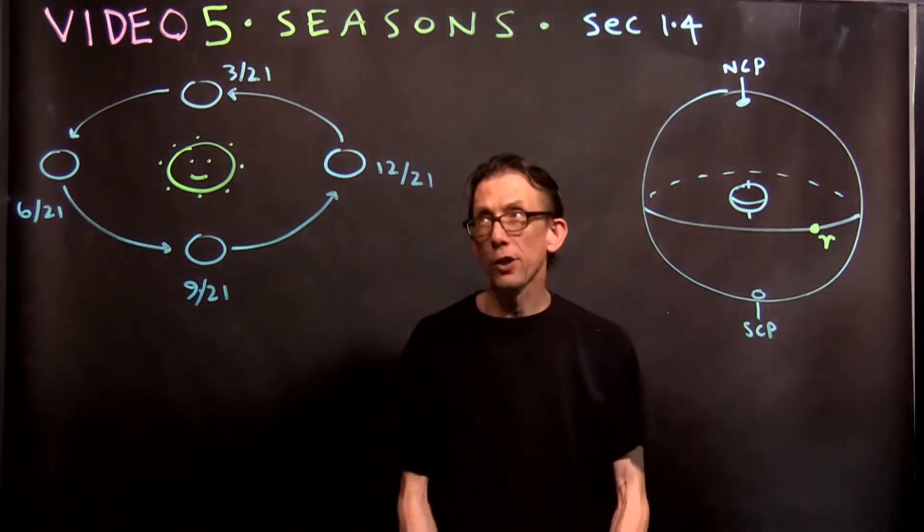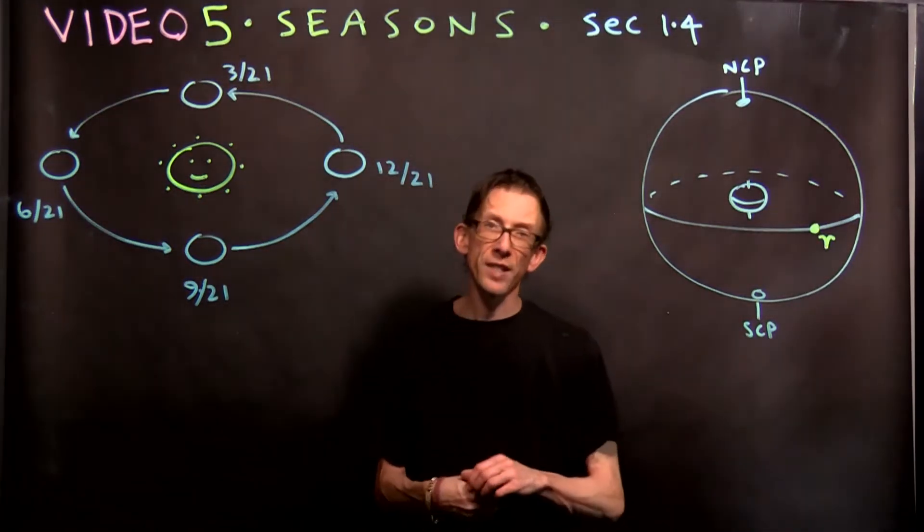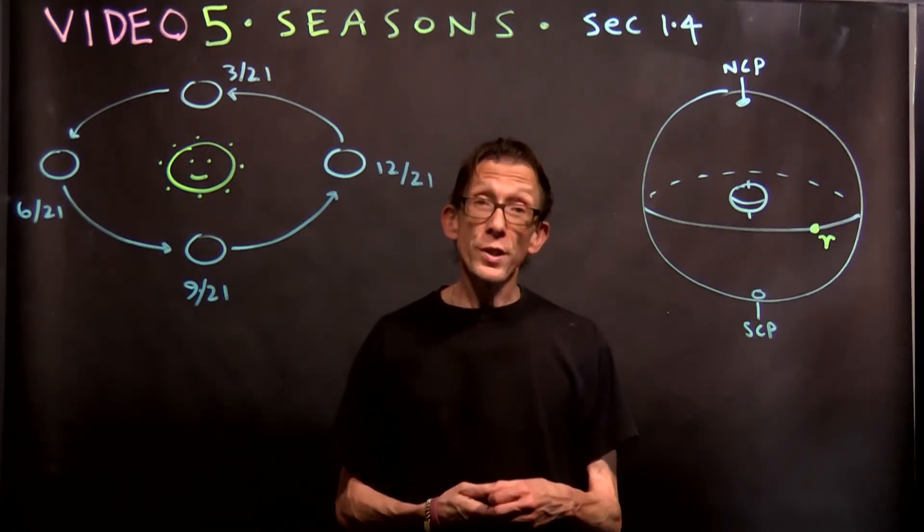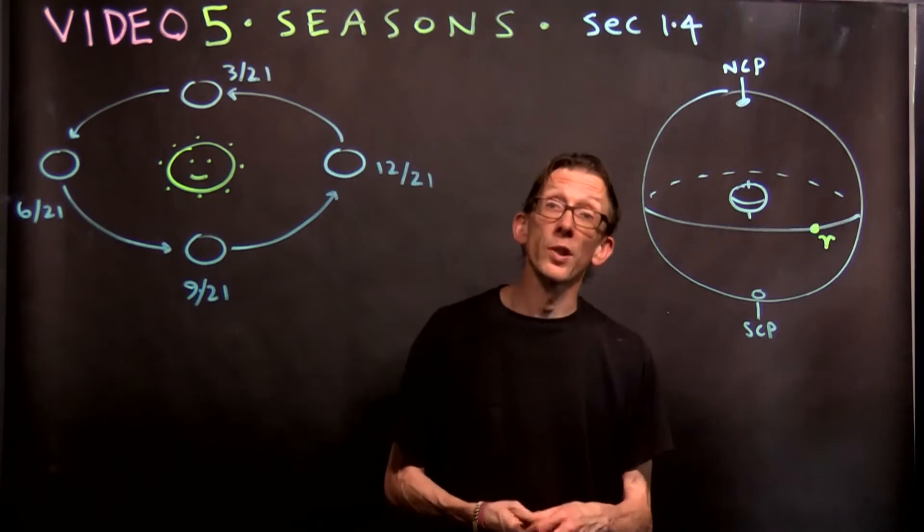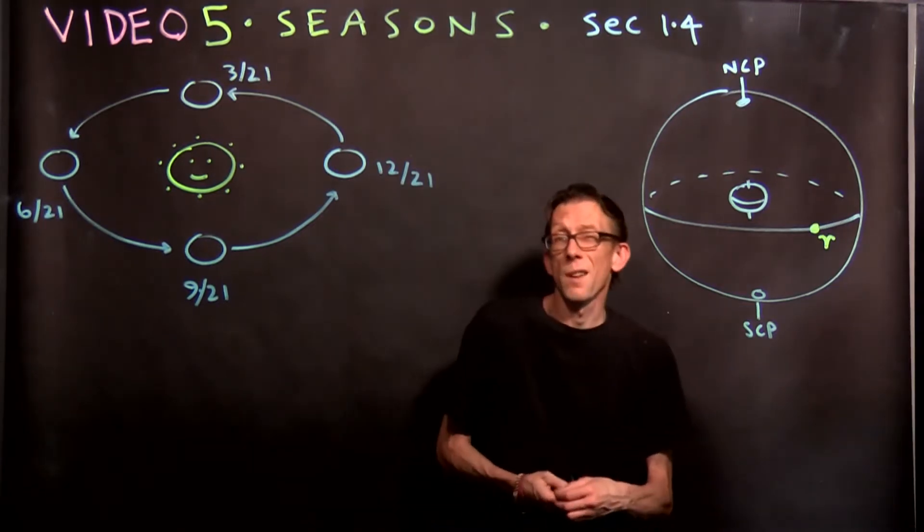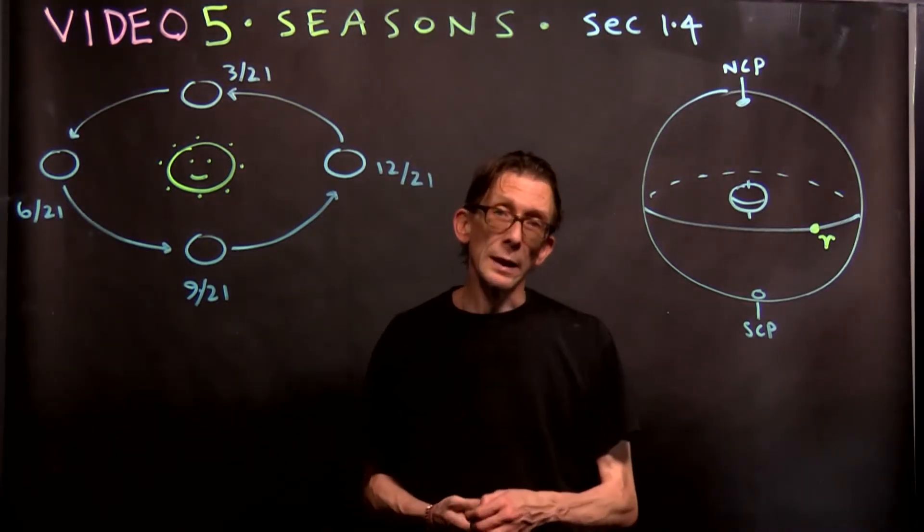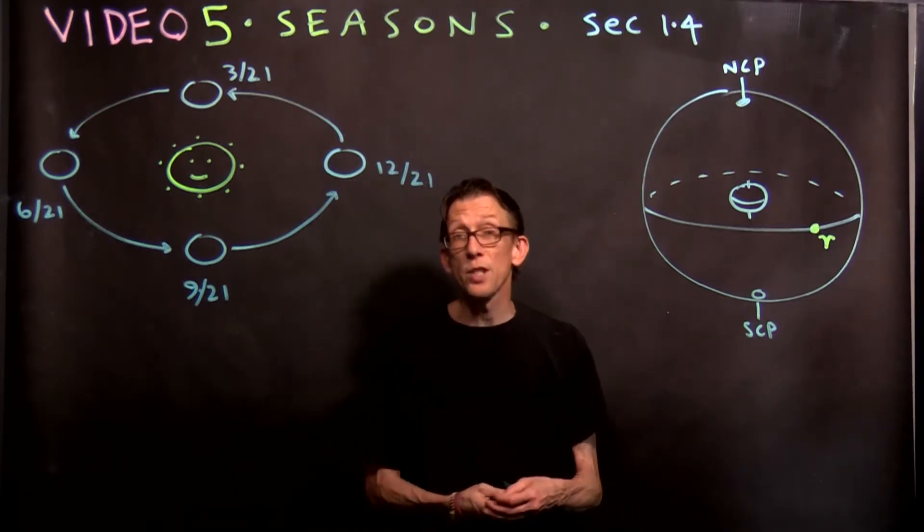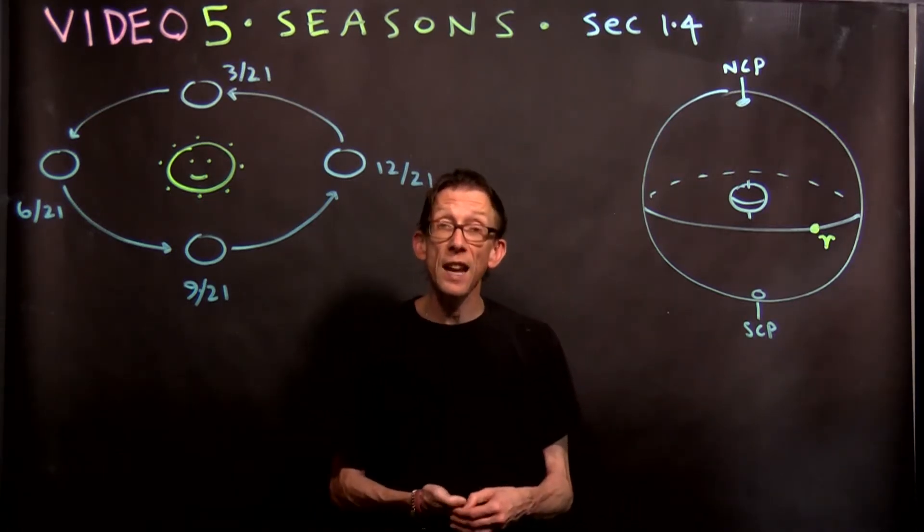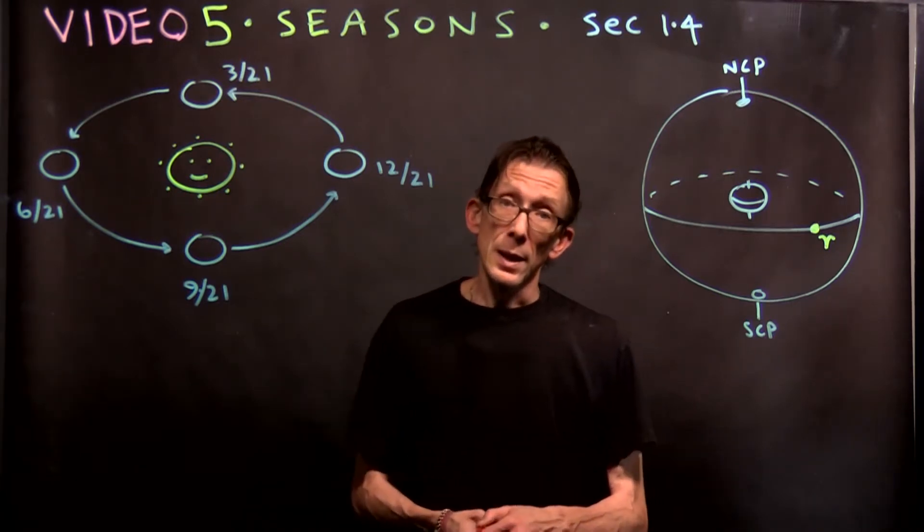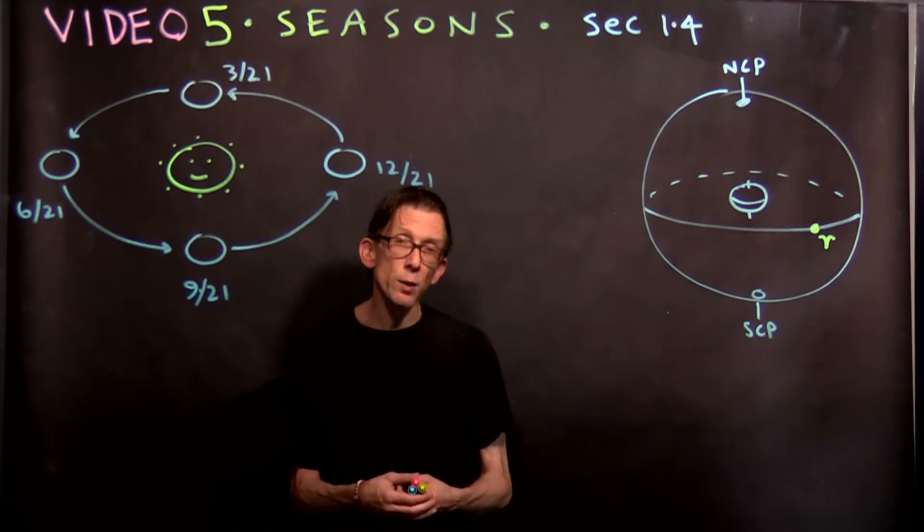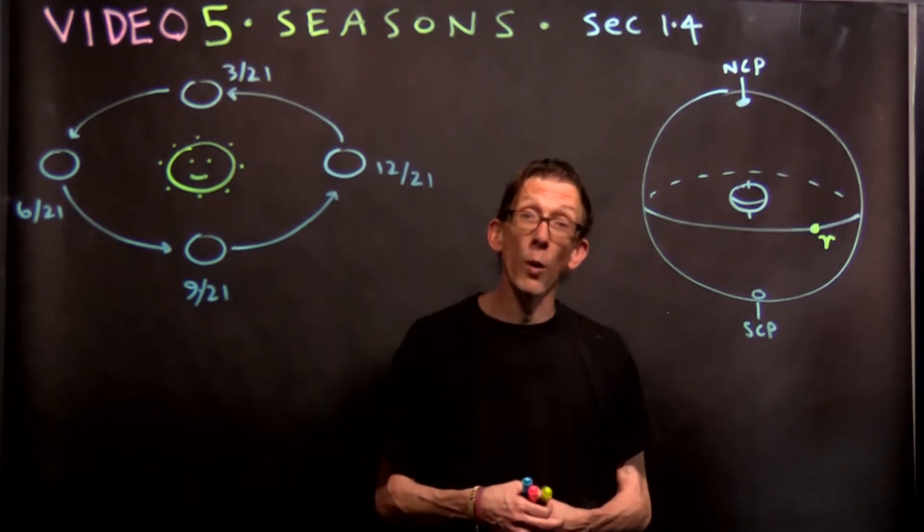Welcome back everybody to lecture five, video five on the seasons. Now right now we are approaching what's known as the summer solstice which comes up in about a few weeks from now, three and a half weeks from now around June 21st we have the summer solstice, the first day of summer. And season, summer, winter, fall, spring and so forth are astronomical in origin.